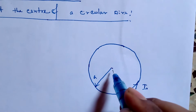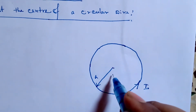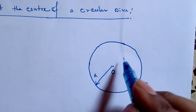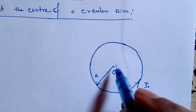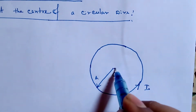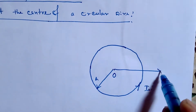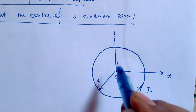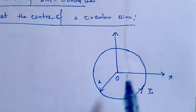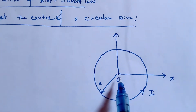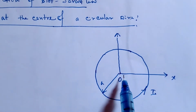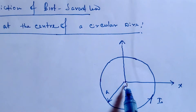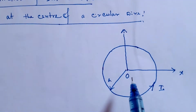We want to find out the field at the point O at the origin. For this, we choose a 2D coordinate system — that is, the xy coordinate system — in such a way that the origin of this coordinate system coincides with the center of the circular wire.